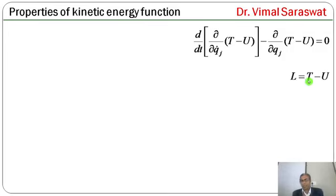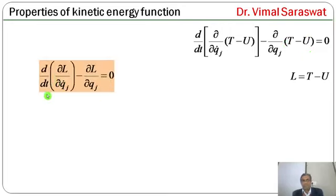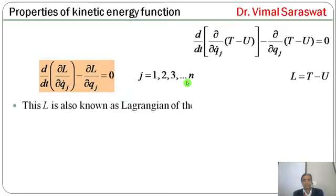Letting L = T - U, the equation becomes: d/dt(∂L/∂qj_dot) - ∂L/∂qj = 0, where J runs from 1 to n. This L is also known as the Lagrangian of the system.